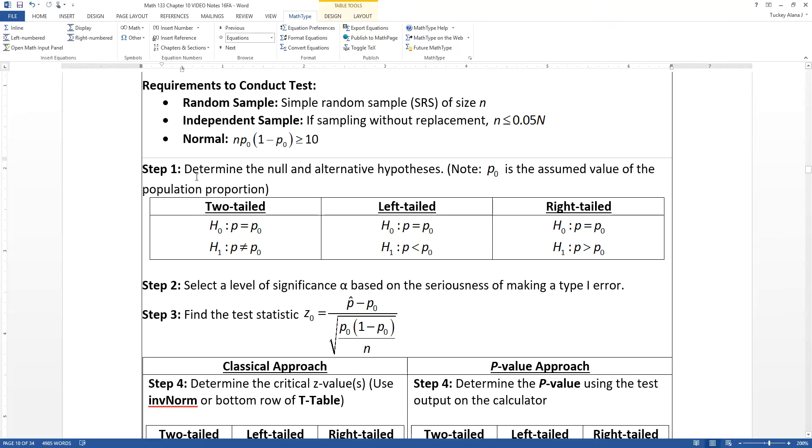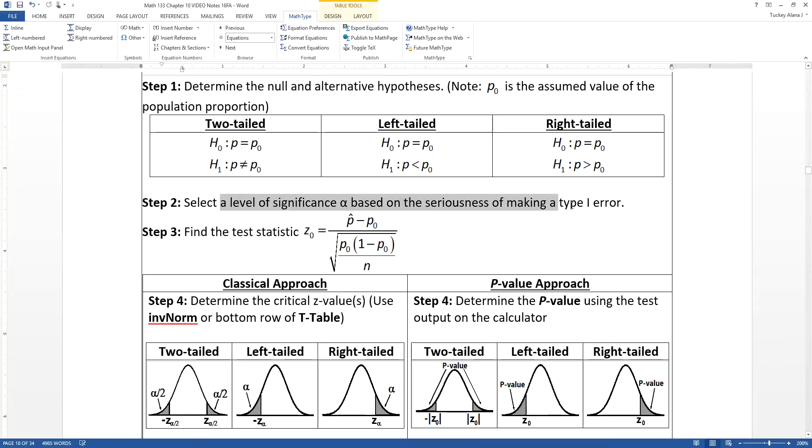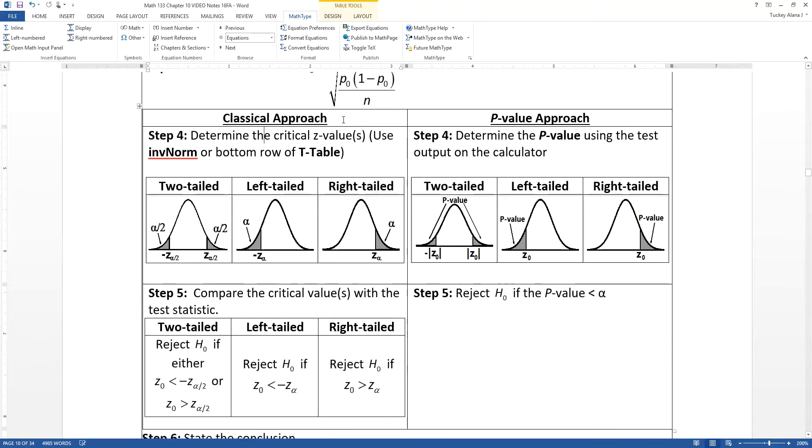Step one, you determine your null and alternative hypotheses. Step two, you determine your alpha, your level of significance. Step three, you'll find something called the test statistic, and every section will have its own calculation for how that is formed. Step four is when you have to make a decision. Are you going to go the classical approach?